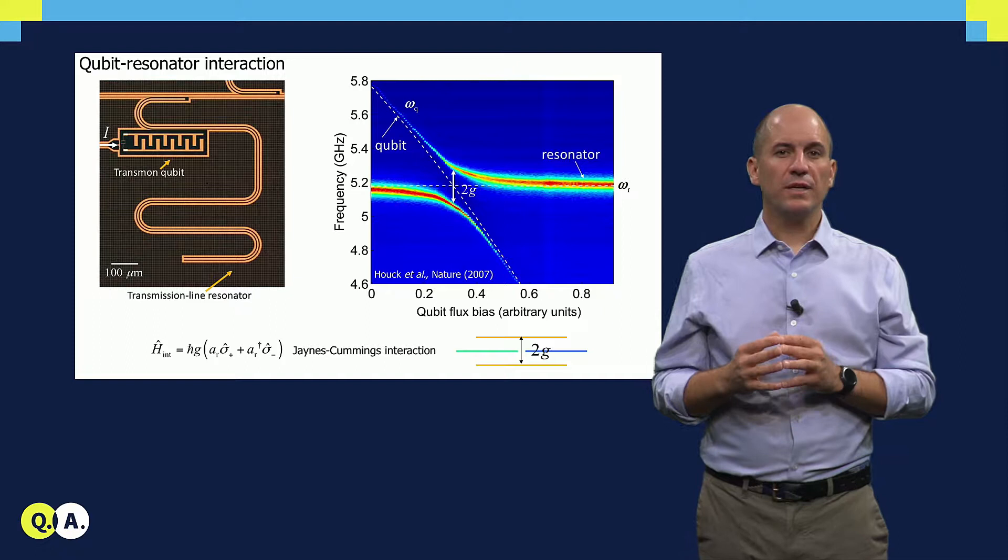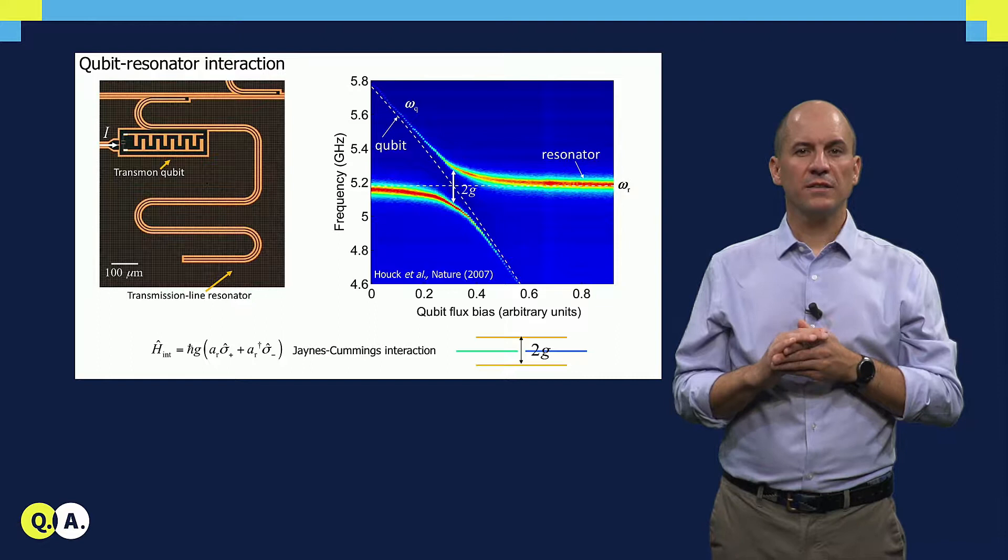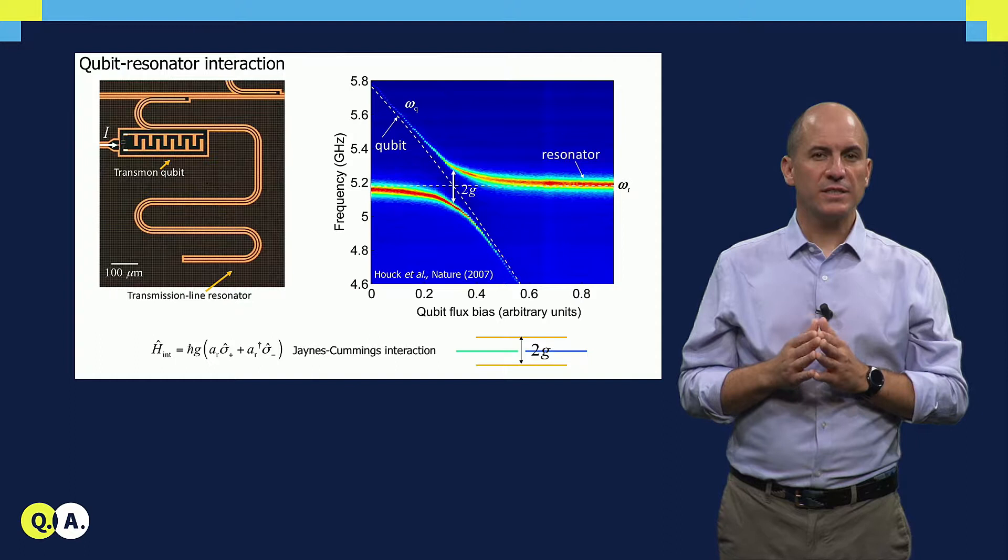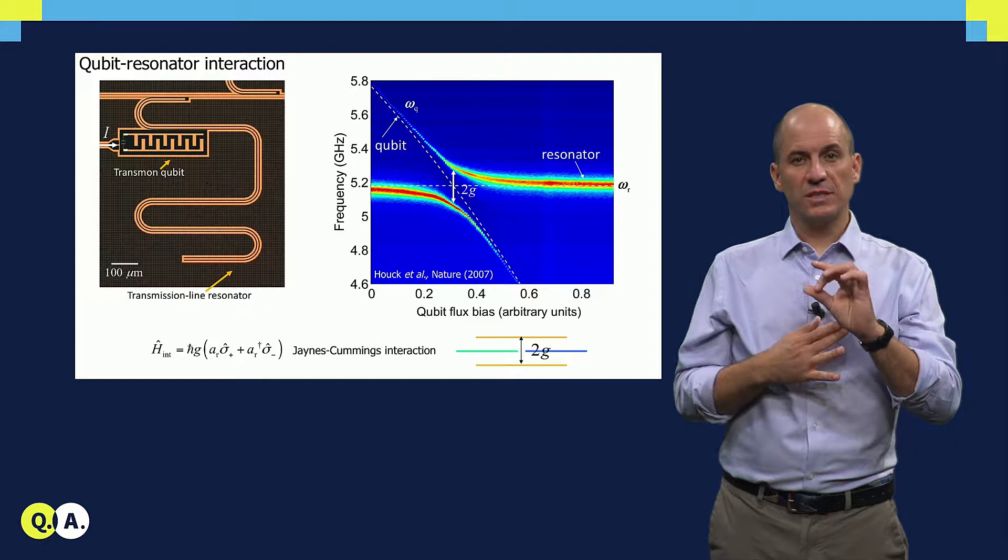The capacitive coupling between the qubit and the resonator is most clearly visualized by performing spectroscopy of the combined system. As this typical image shows, as we tune the qubit through resonance with the resonator, we observe the emergence of an avoided crossing. This avoided crossing is known as the vacuum-Rabi splitting. The minimum splitting is equal to twice the coupling constant G in the celebrated James Cummings Hamiltonian describing the system quantum mechanically.